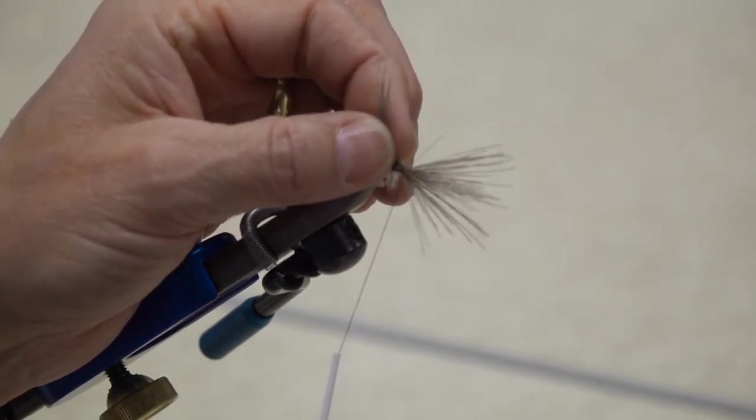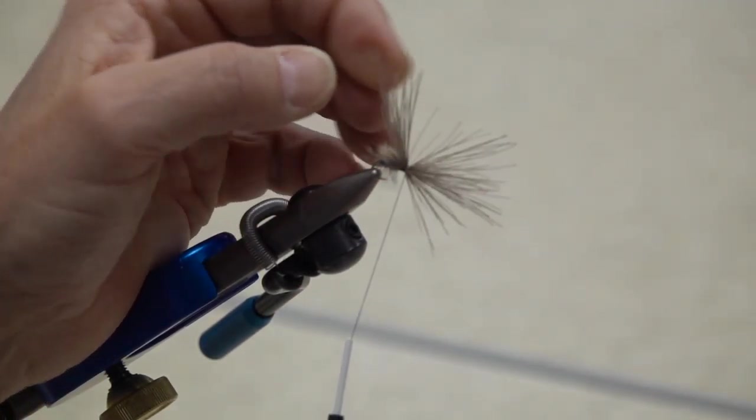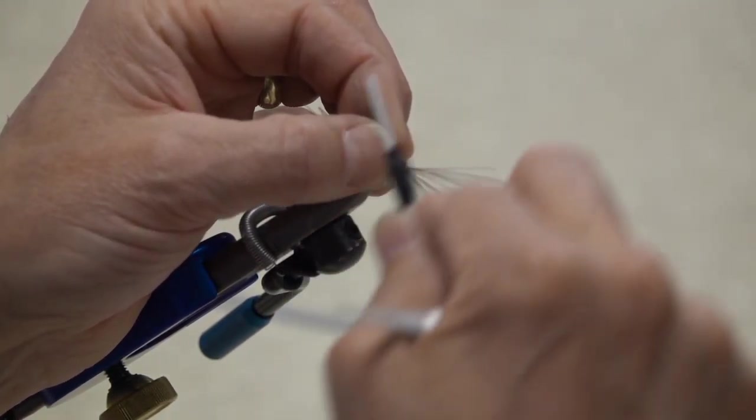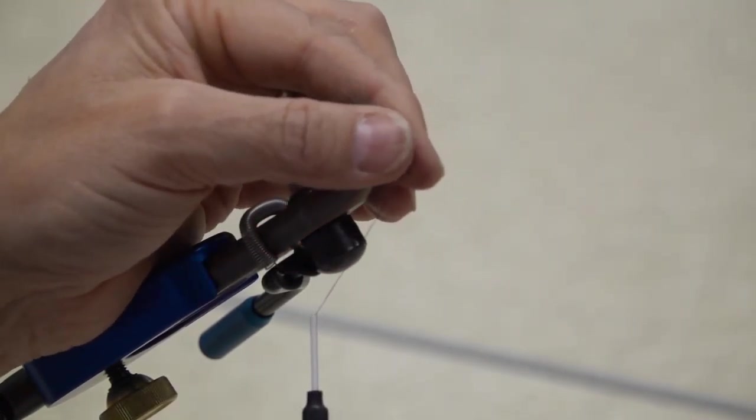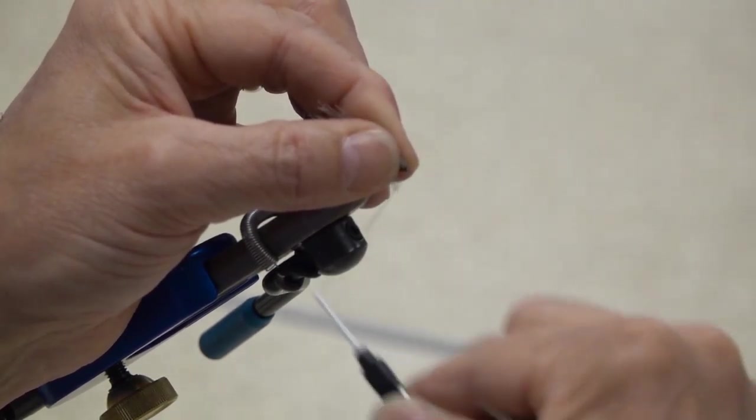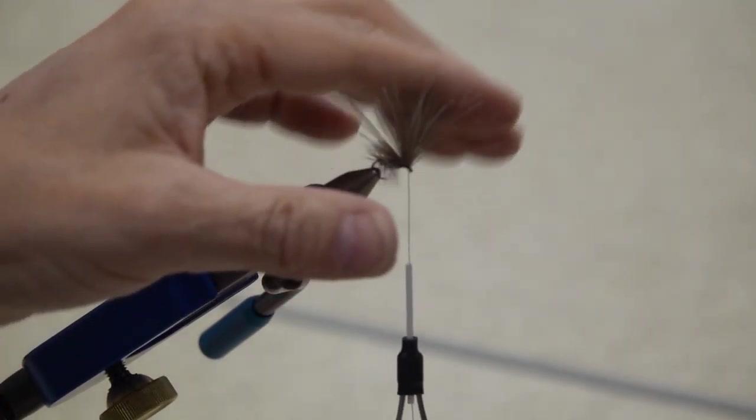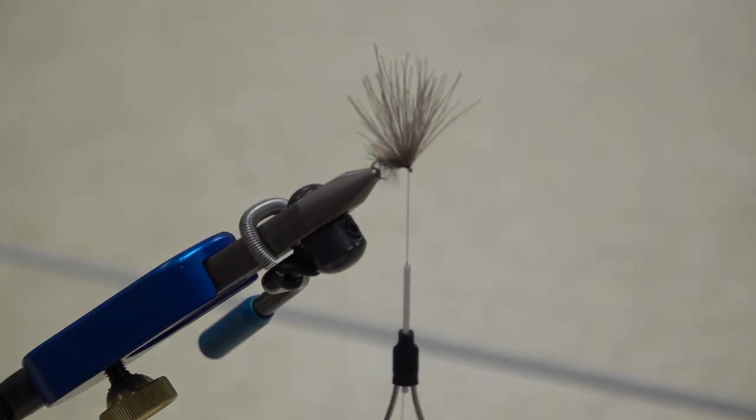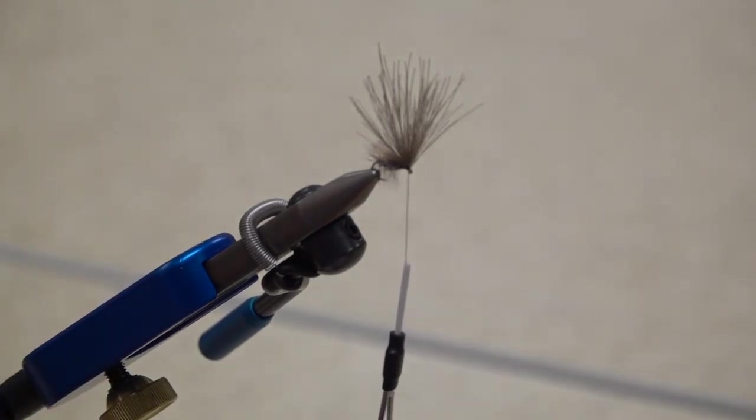Keeping tension on your thread, you've now got this little wing sticking back. I'm going to grab about a third of the hair that's in the front and put a nice tight wrap through what's left. Grab the next third, put another wrap through there, and grab the rest of what's left and put a couple of wraps right in front of it, right behind the eye of the hook.